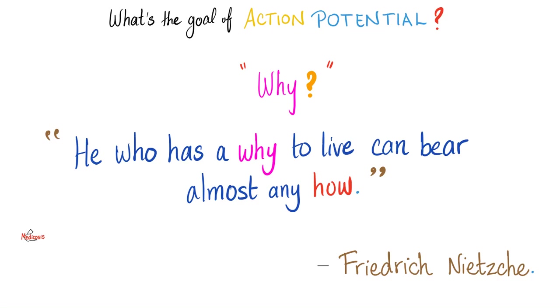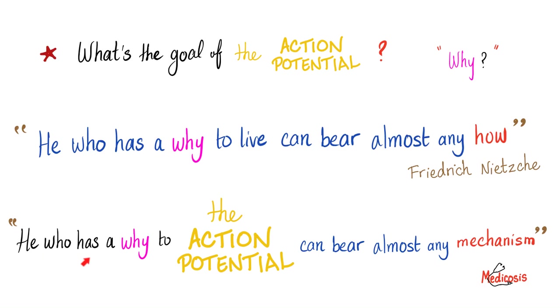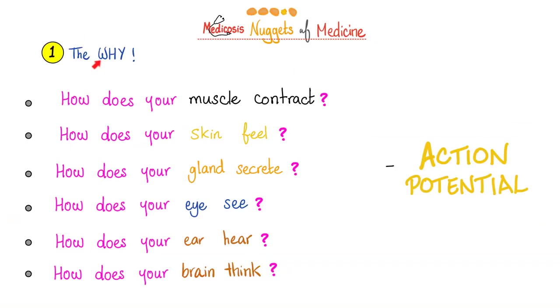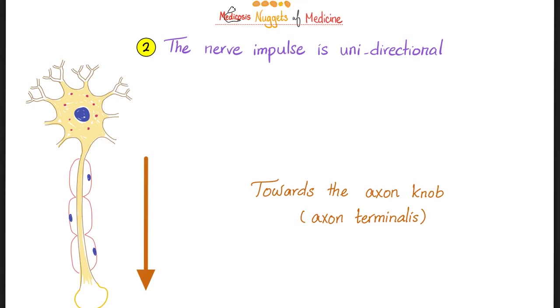Nerve physiology is all about the action potential. First of all, we gotta understand the why. Because as Nietzsche said, he who has a why to live can bear almost any how. Medicosis says he who has a why to the action potential can bear almost any mechanism. So first question, why do we need action potential? How does your muscle contract? Action potential. How does your skin feel? Action potential. How does your gland secrete? Action potential. Whether you're talking about an endocrine gland, such as your pancreas secreting insulin, or an exocrine gland, such as your lacrimal gland secreting your precious crocodile tears. How does your eye see? Action potential. How does your ear hear? Action potential. How does your brain think? Thoughts are action potential. Napoleon Hill once said, Thoughts are things, powerful things are that, when mixed with definiteness of purpose, persistence, and a burning desire for their translation into riches. All right. Medicosis nuggets of medicine. By the end of this course, you will have collected many nuggets.